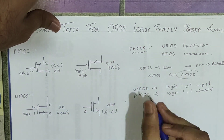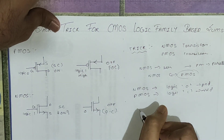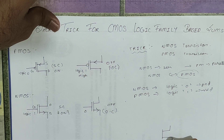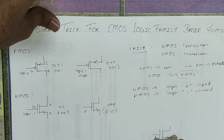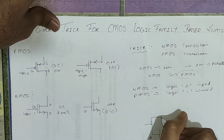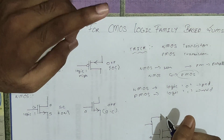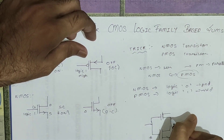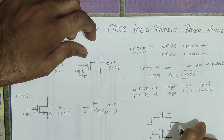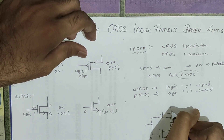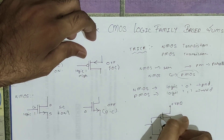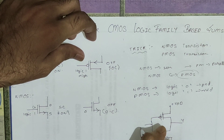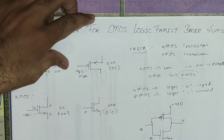Now if we have to build a NOT gate from CMOS, we will first make the NMOS and connect its source to ground. This input A will be the same for PMOS also. For the NOT gate we want only one terminal at input and one terminal at output. We make the PMOS, take the output from the drain, and connect the PMOS source to +VDD.